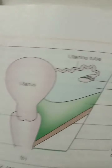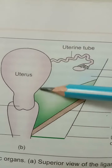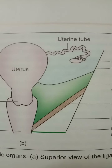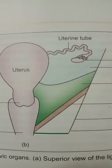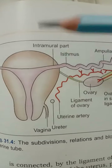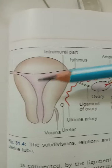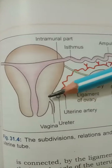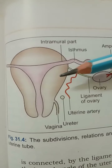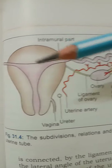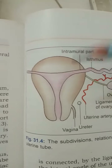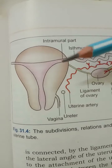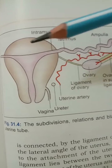The myometrium is the thickest layer of the uterine wall. It is a mass of smooth muscle fibers interlaced with irregular connective tissue, blood vessels, and nerves.